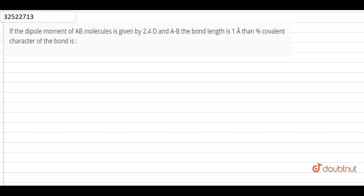Guys, we have a question. If the dipole moment of AB molecules is given by 2.4 debye and AB bond length is 1 angstrom, then find the percentage covalent character of this bond.